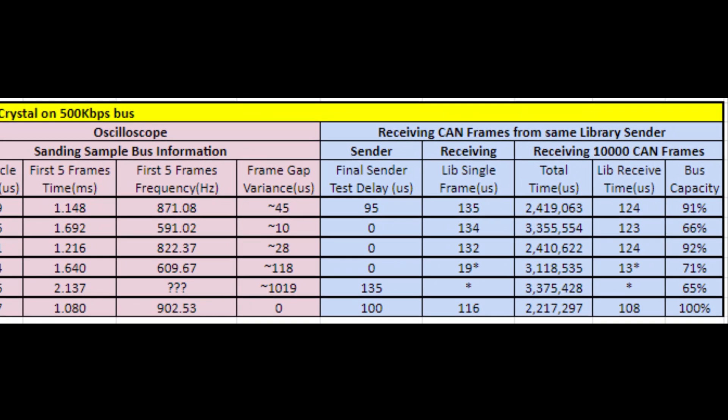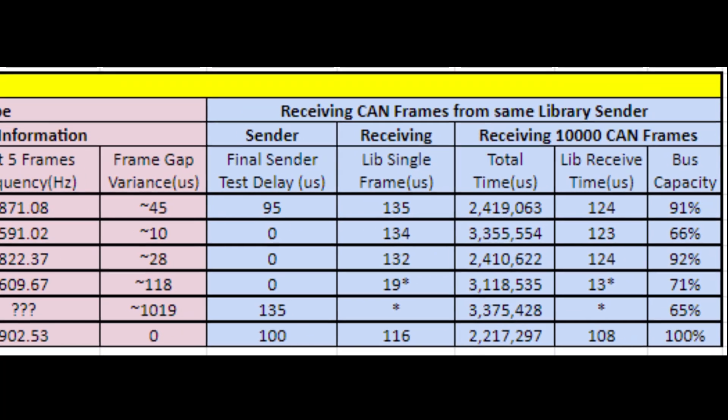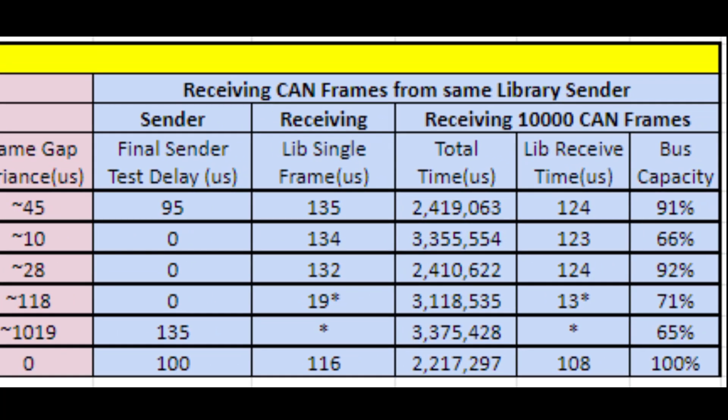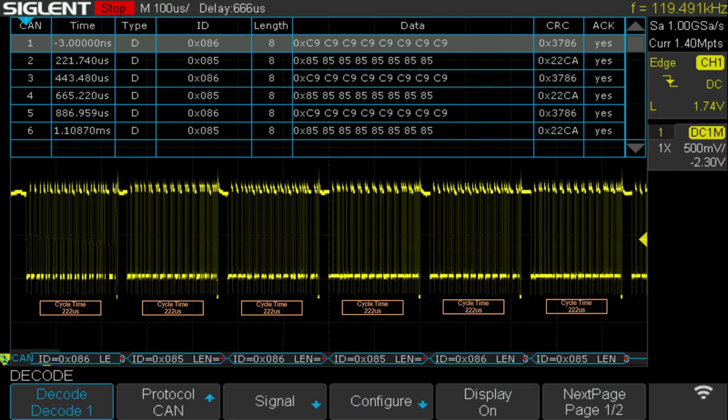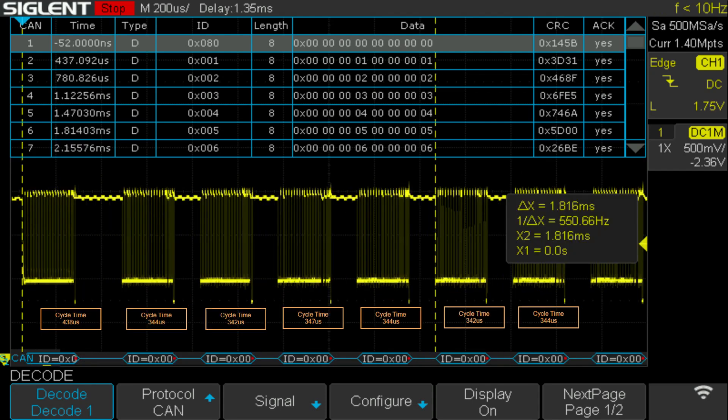I found the test to be quite surprising, with results ranging from a maximum of only 65% bus capacity to one that could easily achieve 100% bus capacity. The best one could run this 500kbps CAN bus at 100% capacity with excellent timing for every frame, while others were consistently slower.